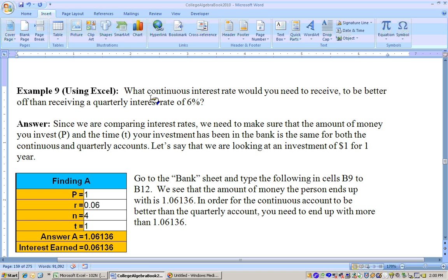On this problem, it's asked what continuous interest rate would you need to receive to be better off than receiving a quarterly interest rate of 6%? We know we've got a quarterly interest rate of 6%. To compare these, we need to compare the same amount of money over the same amount of time.